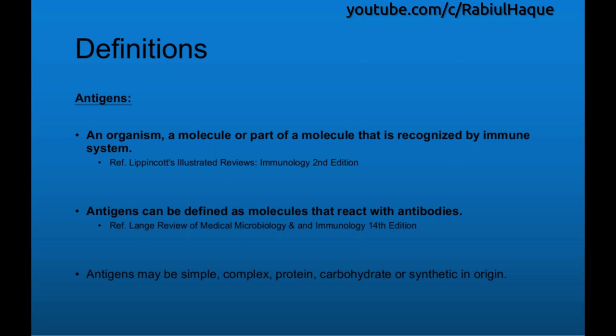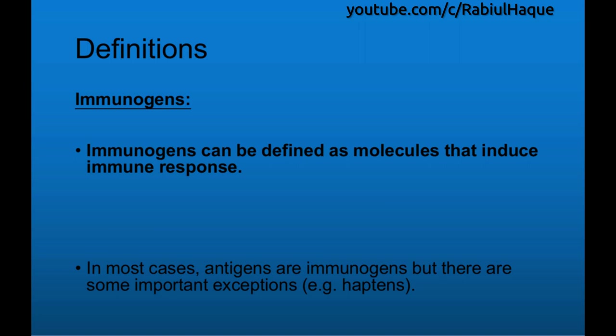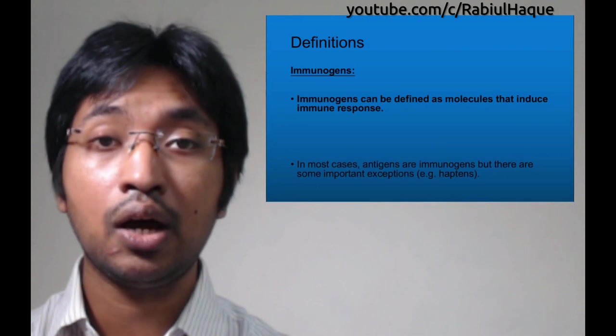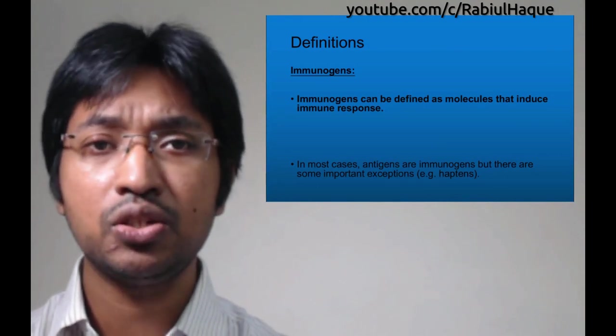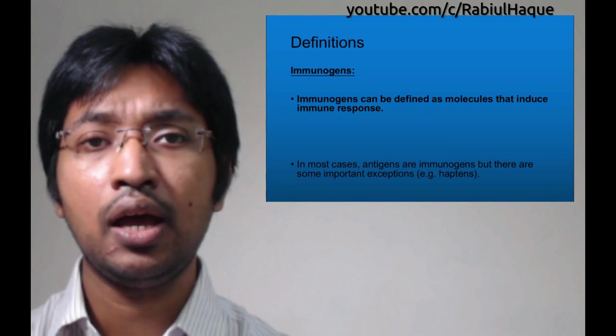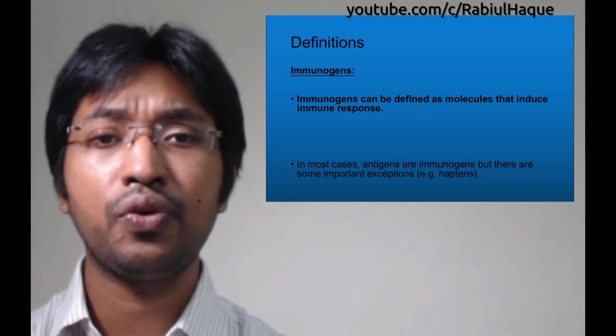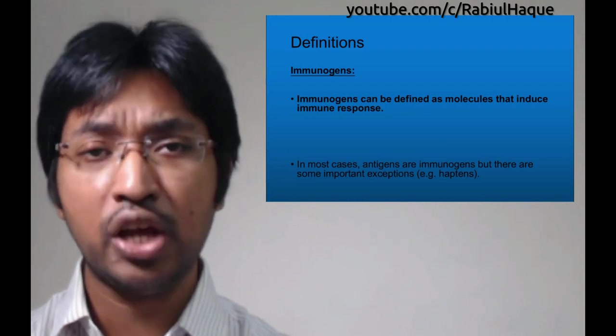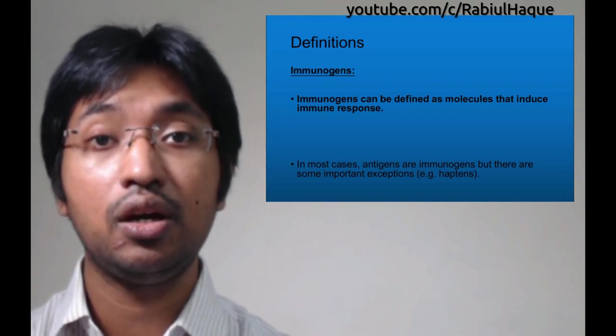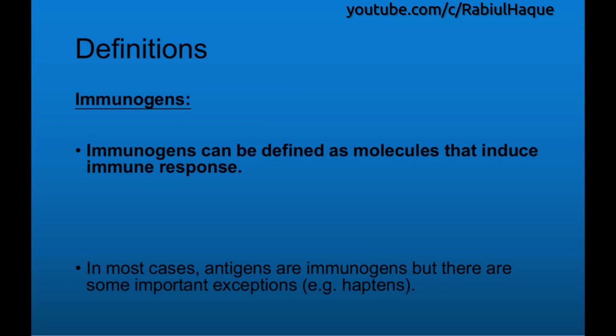Antigens may be simple, complex, protein, carbohydrate, or synthetic in origin. Immunogens can be defined as molecules that induce an immune response. In most cases, antigens are immunogens and the term antigen is often used interchangeably with immunogen. However, there are some important exceptions — for example, haptens.